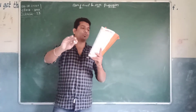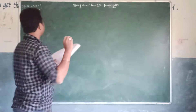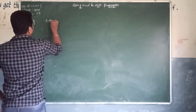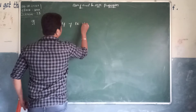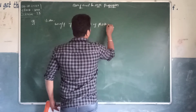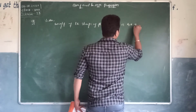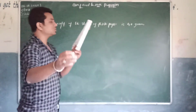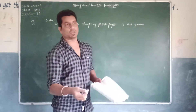First one: if the weight of 12 sheets of thick paper is 40 grams, how many sheets of the same paper would weigh 16 and 2/3 kilograms? Let us write the given information. Given: weight of 12 sheets of thick paper is 40 grams.